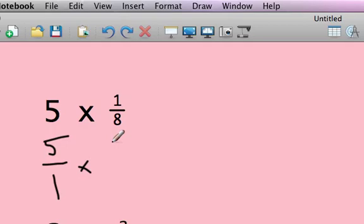So 5 over 1 times 1 over 8, you don't have to find a common denominator with this. You just multiply straight across. So you do 5 times 1 is 5, and 1 times 8 is 8. And we have 5 eighths in this instance.